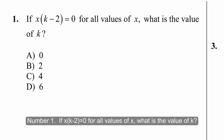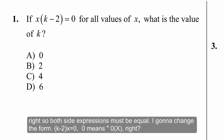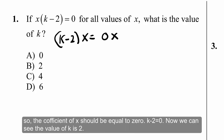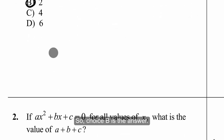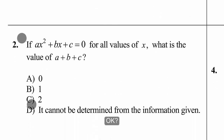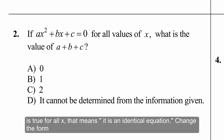Now we have some SAT problems. Number one: if x(k - 2) = 0 for all values of x, what is the value of k? Since it is an identical equation, both sides must be equal. Rewriting: (k - 2)x = 0x. The coefficient of x must equal 0, so k - 2 = 0, giving us k = 2.